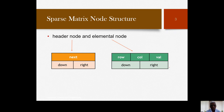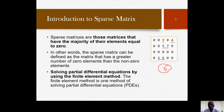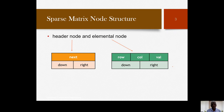First, we should understand what the node structure of the sparse matrix will look like. We are going to store all non-zero elements in the form of a linked structure — not a simple row-wise linked list structure, but the entire matrix will be represented using a multi-linked structure. We need to understand two types of node structures: one is called the header node and the other is called the elemental node.